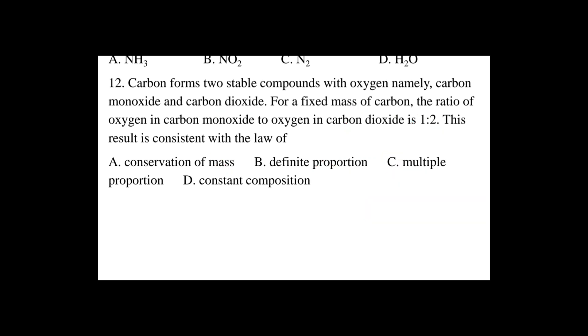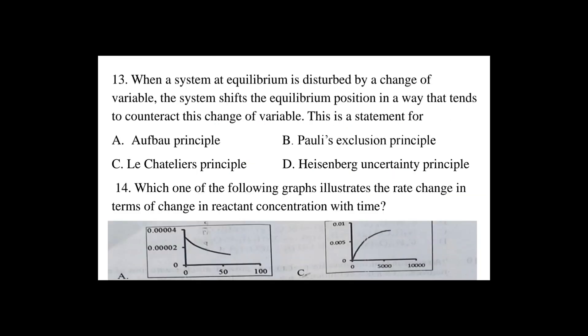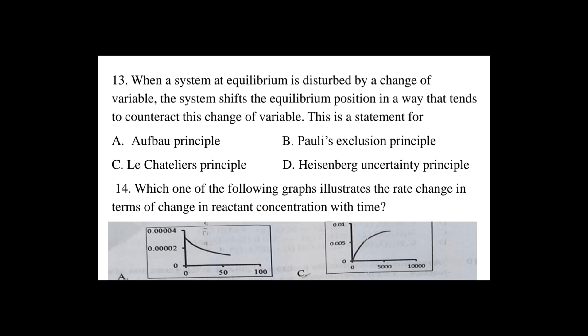Question number 13: When a system at equilibrium is disturbed by a change of variable, the system shifts its equilibrium position in a way that tends to counteract this change. This statement refers to: A. Aufbau principle, B. Pauli exclusion principle, C. Le Chatelier's principle, D. Heisenberg uncertainty principle.